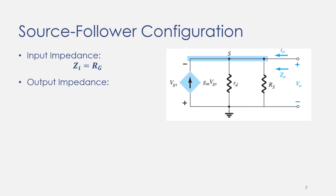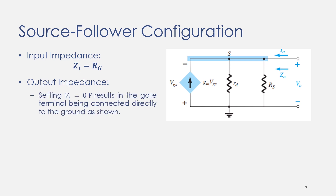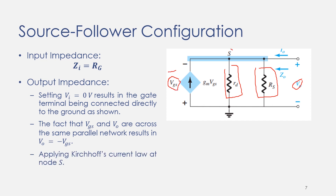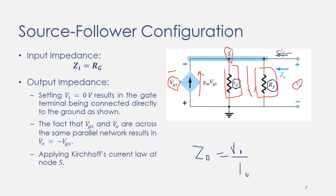To find output impedance, we first set V_input equal to zero. When we do that, the gate terminal is connected to ground. The Vgs appears at this terminal, so Vgs is actually the voltage appearing at this section — meaning V_output is equal to negative Vgs. Applying KCL at the output node, we can see that I_output is entering this terminal and gm*Vgs is also entering this terminal, while two currents are exiting.